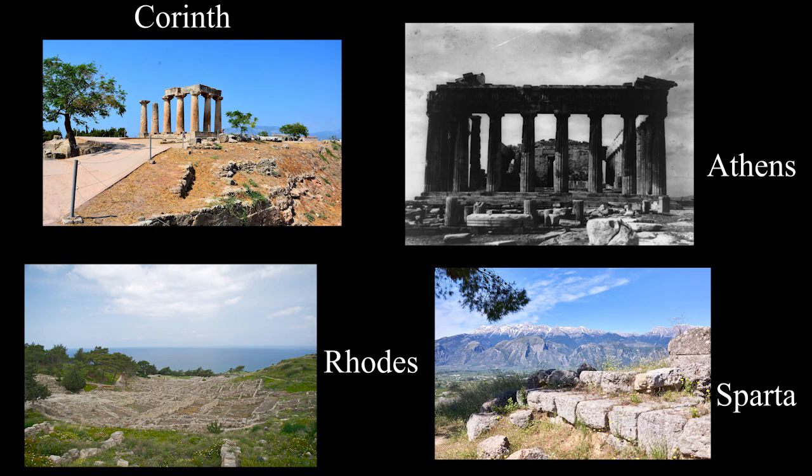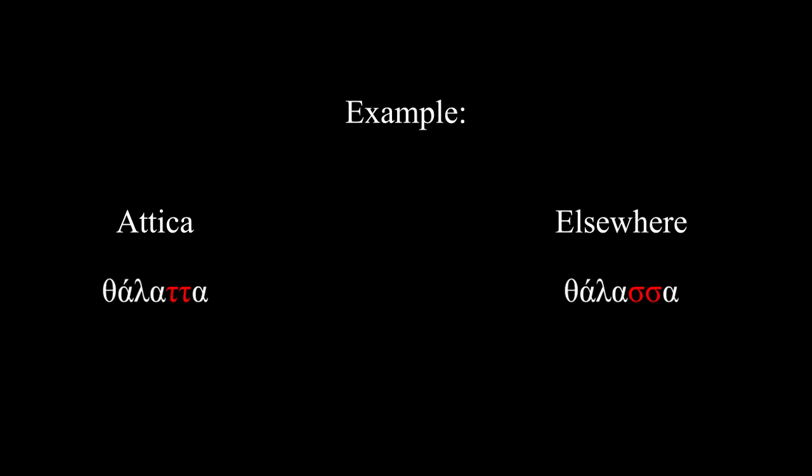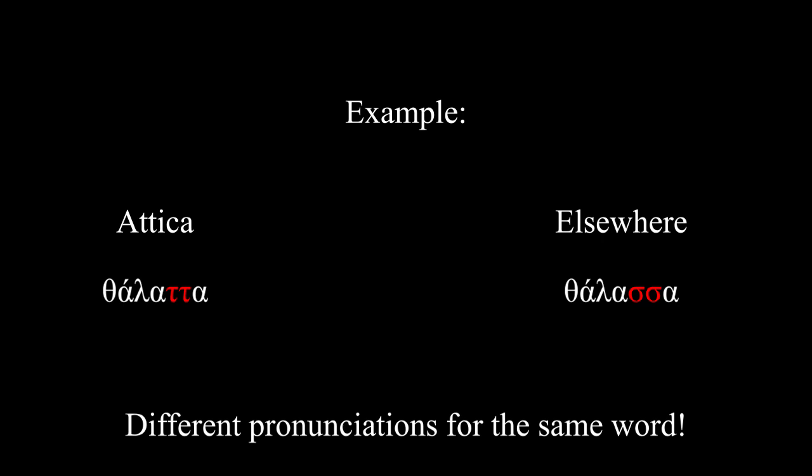Pronunciation in Ancient Greek is quite varied owing to its long history and geographic spread. Even in the same time period, people in different places pronounced the language differently. As a result, the same word can be pronounced many different ways depending on the method chosen.